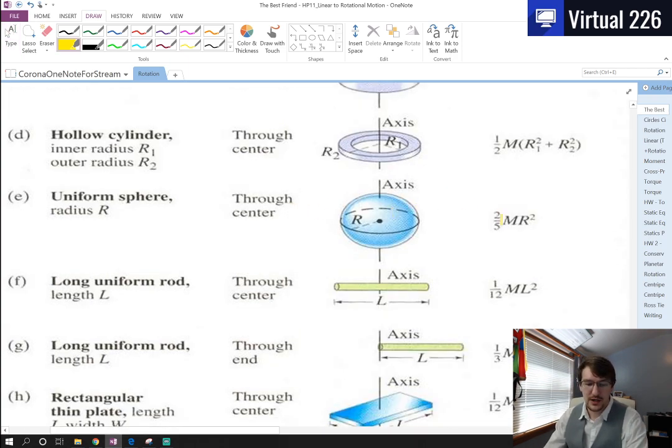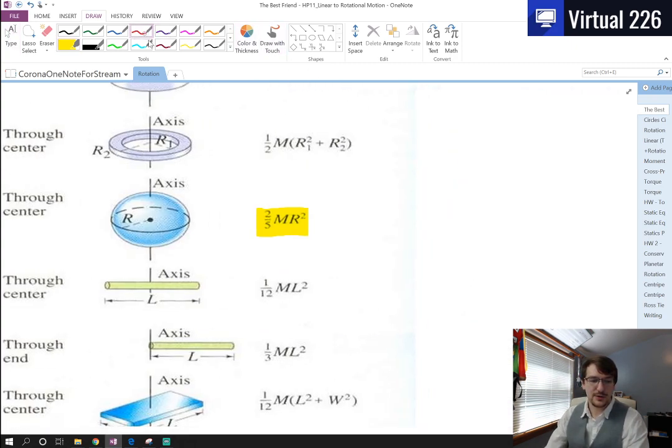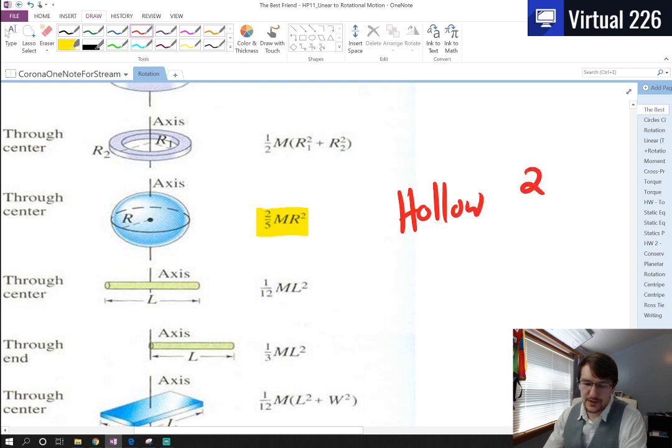Other shapes we really like in the world of physics are uniform solid spheres - those are two-fifths MR². A hollow sphere's moment of inertia is two-thirds MR².